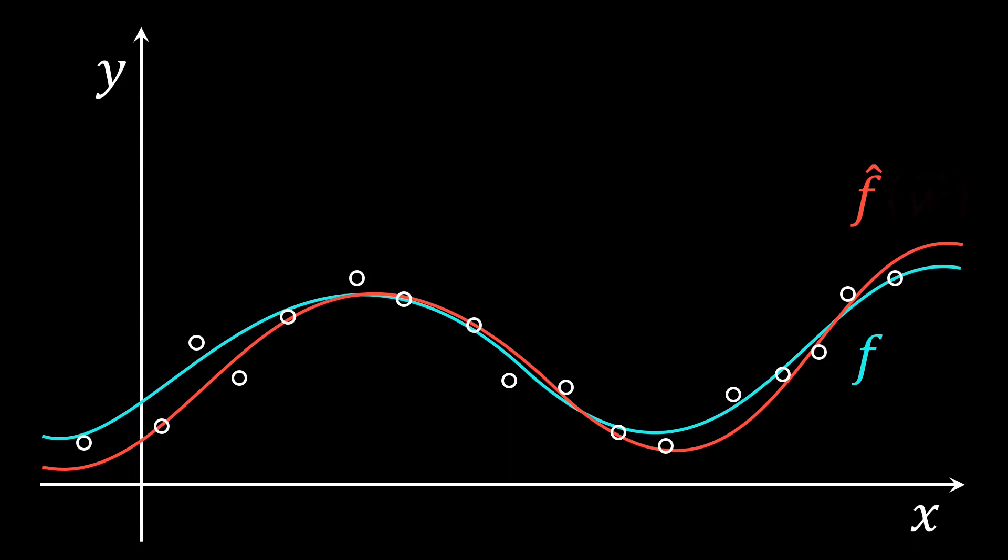To do so, we often parameterize our function by some weights w. We can then define a loss function L that measures how good our approximation performs on the given dataset D. The task of finding a good approximation can then be equally formulated as finding the set of weights w that minimizes the loss function.